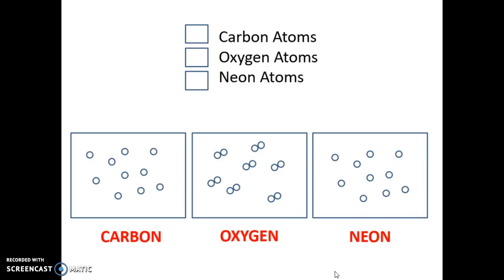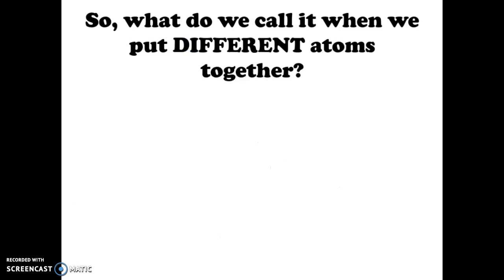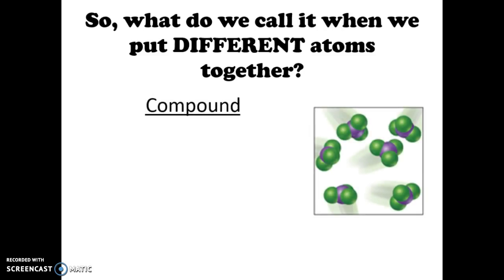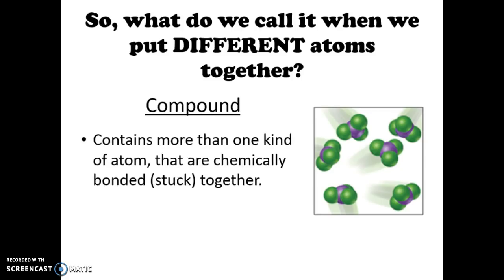So if the same elements put together or the same atom stuck together gives us an element, what do we call it then when we put different atoms together? Well we would call that a compound. So a compound more specifically contains more than one kind of atom that are chemically bonded or stuck together.